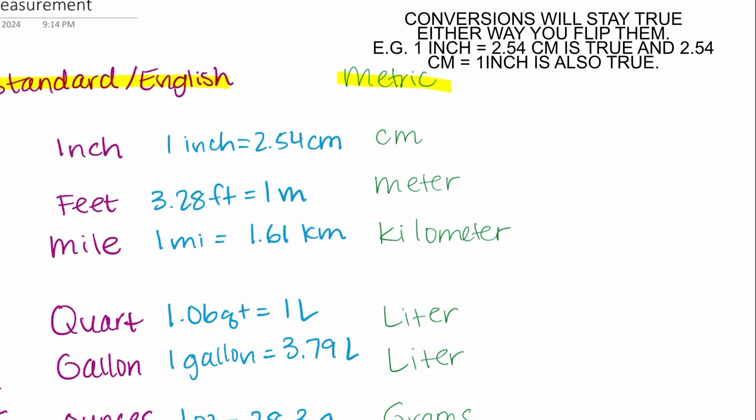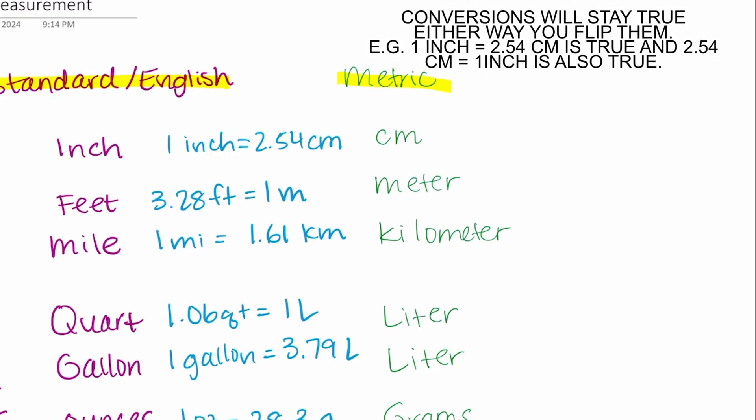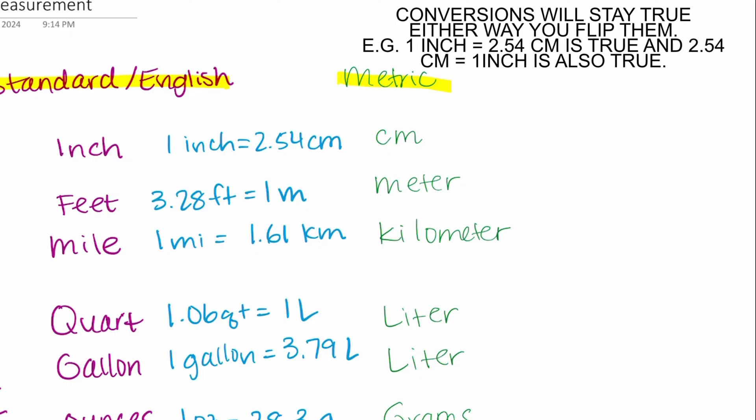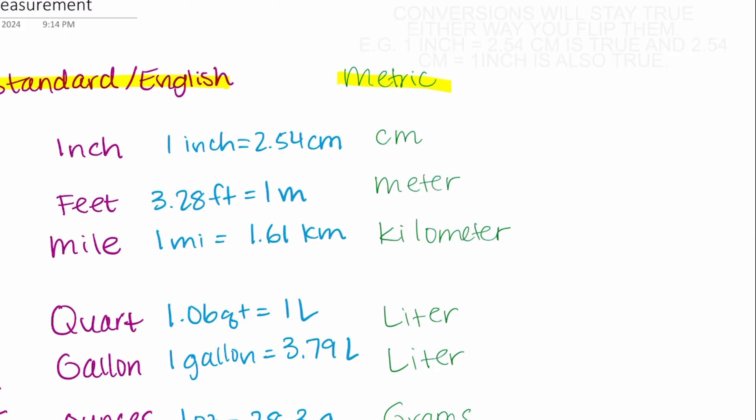You can take any of these conversions to use and you can also flip them. They'll still be true the opposite direction. So if you say one inch is equal to 2.54 centimeters, you can also say 2.54 centimeters is equal to one inch. Doesn't matter which direction you say it, it's true both directions.